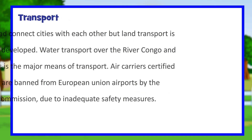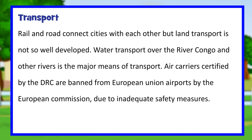Rail and road connect cities with each other, but land transport is not so well developed. Water transport over the Congo River and other rivers is the major means of transport. Air carriers certified by the DRC are banned from European Union airports by the European Commission due to inadequate safety measures.